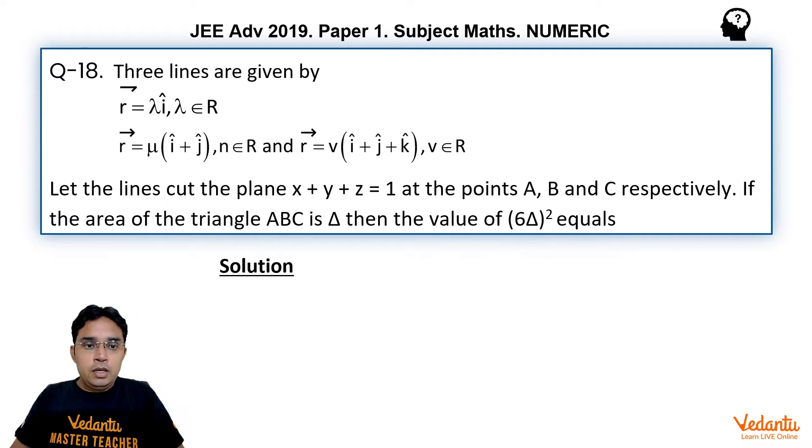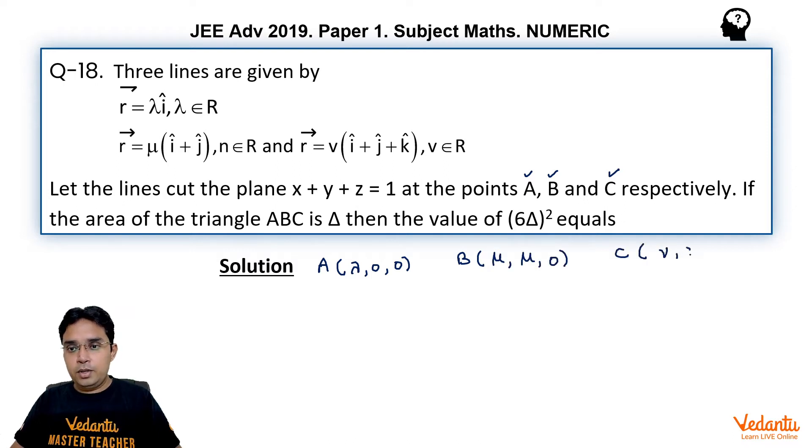Now we can take points on these lines in terms of lambda, mu and nu. Let these points A, B and C on these lines where they are intersecting this plane as A as lambda, 0, 0, B to be mu, mu, 0 and C to be nu, nu, nu. Because these A, B, C are point of intersection of these lines with plane, so these points should satisfy the equation of this plane.